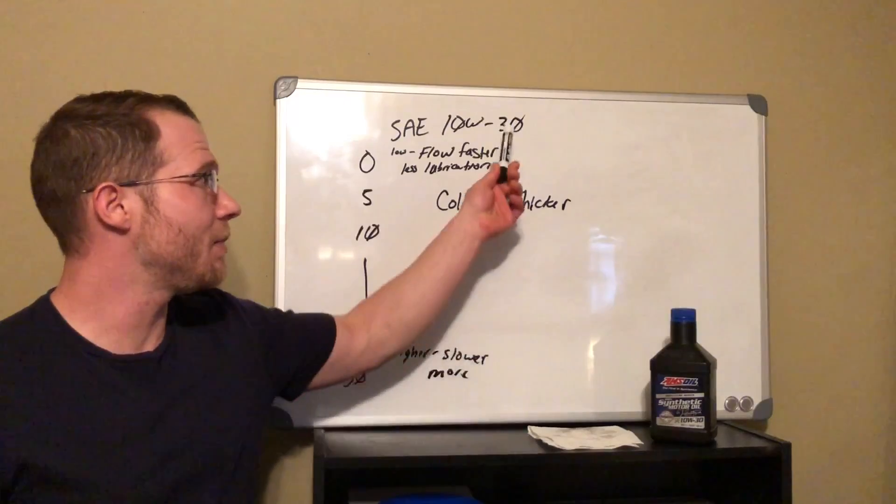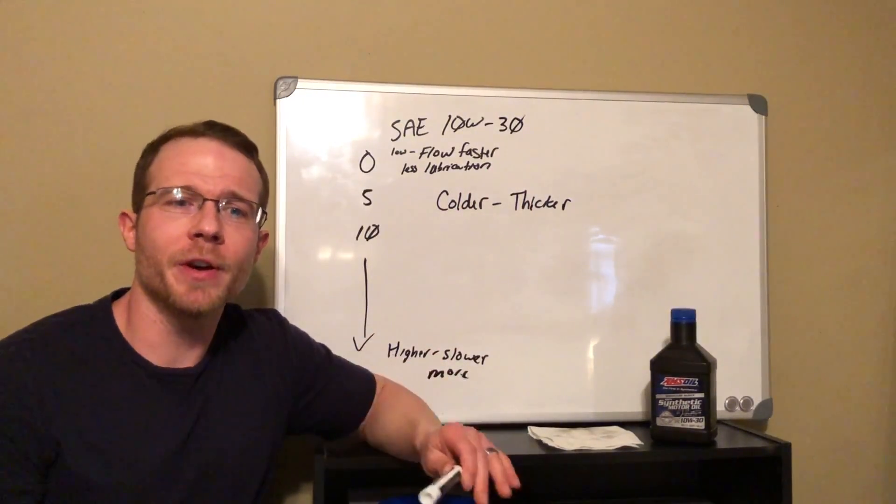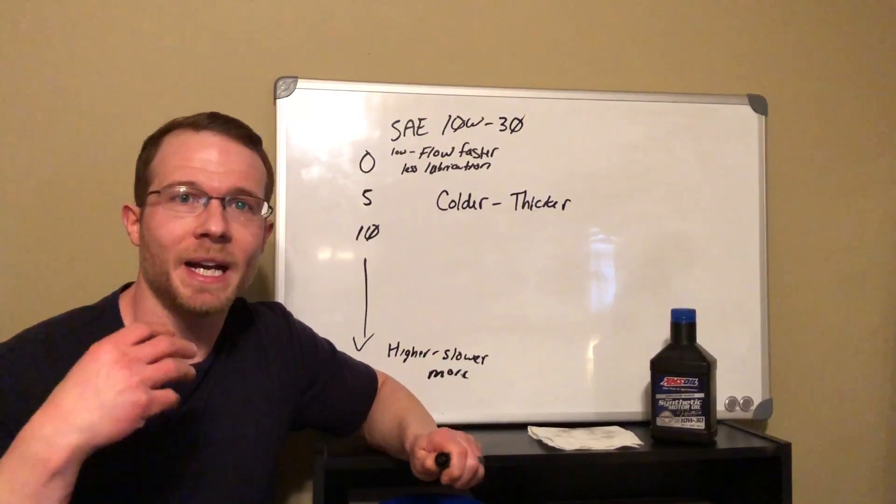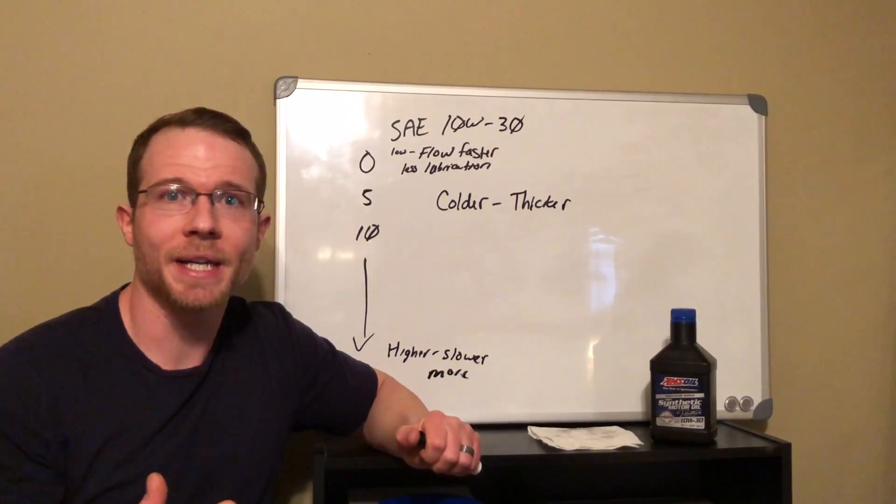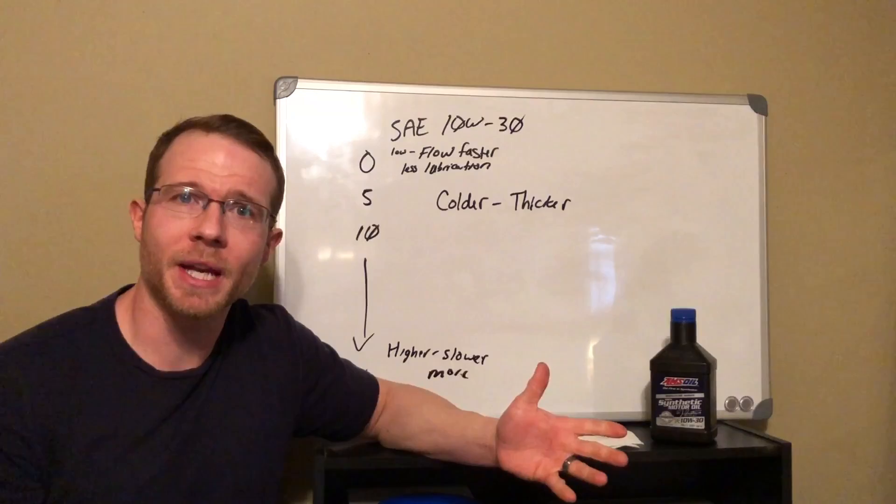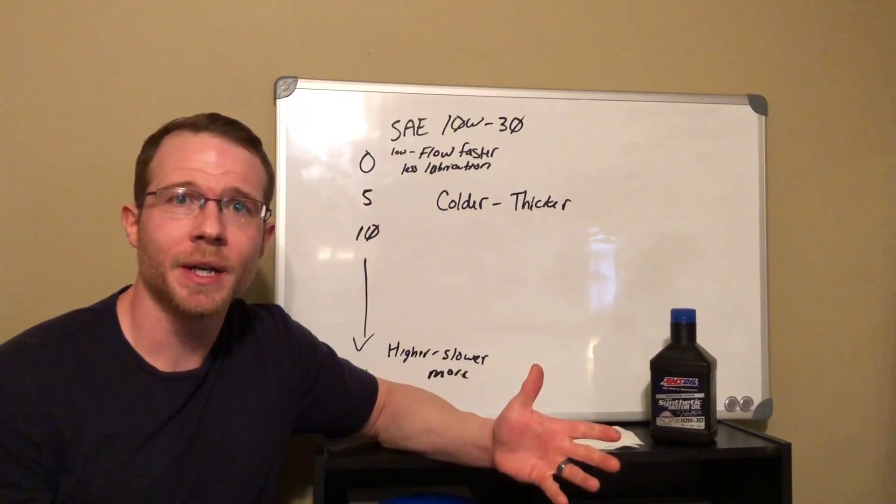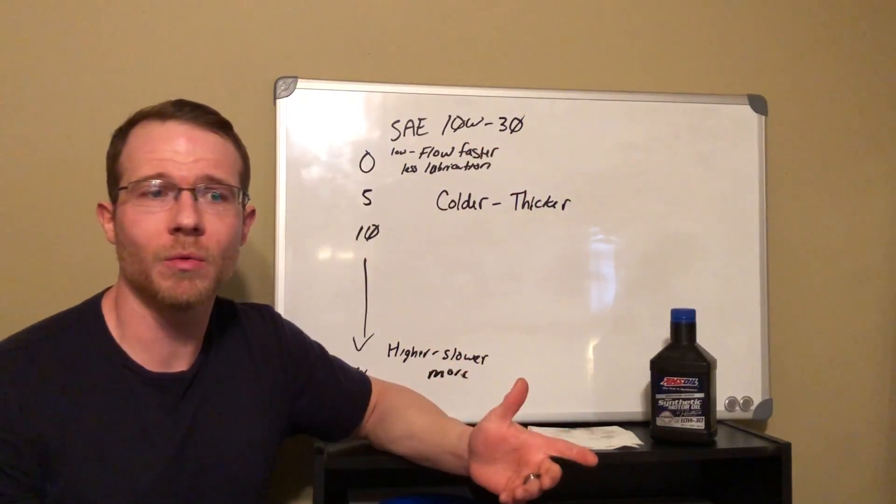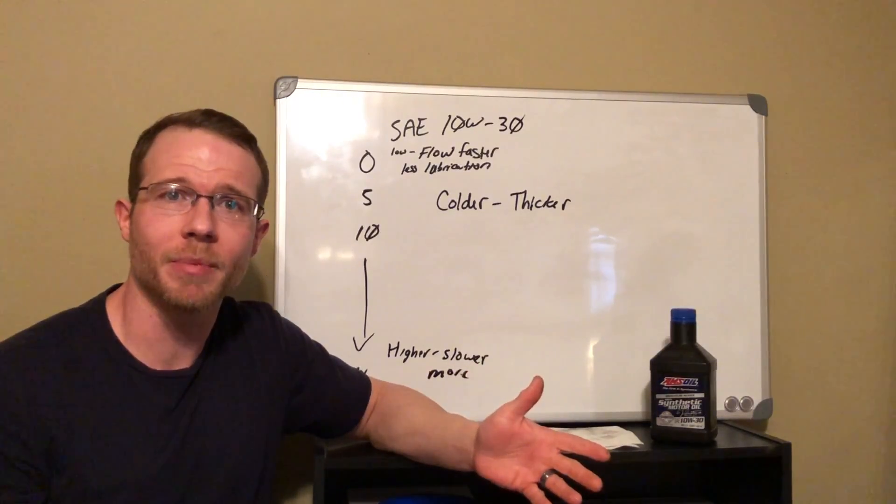So in our example of our 30 weight, the 30 weight oil would provide optimum protection at operating temperature because you're right around that 200 degree mark. And so it's going to flow real well, but it's still going to provide protection.